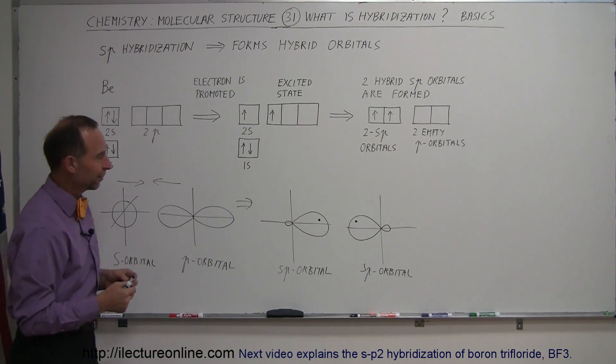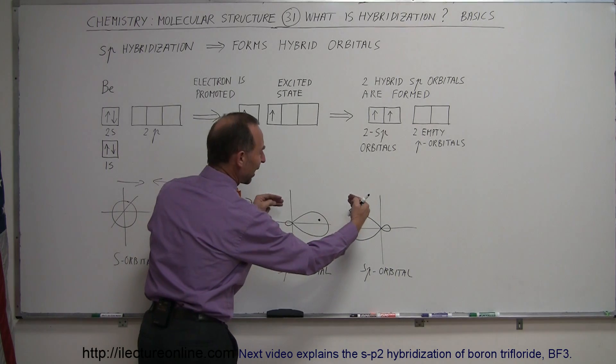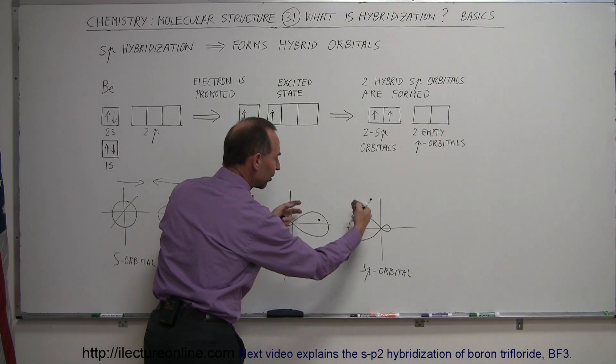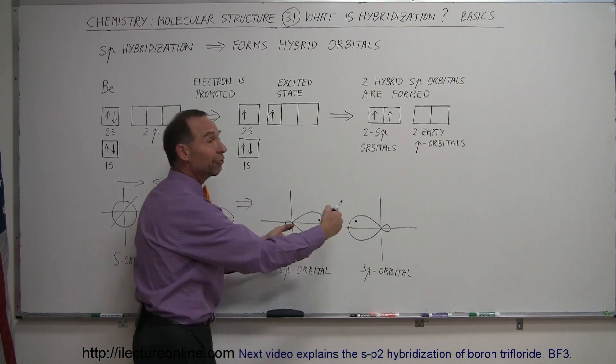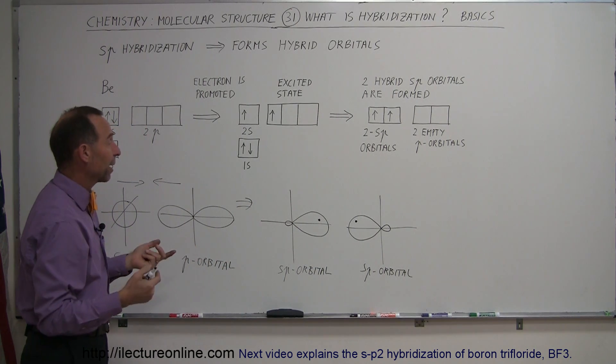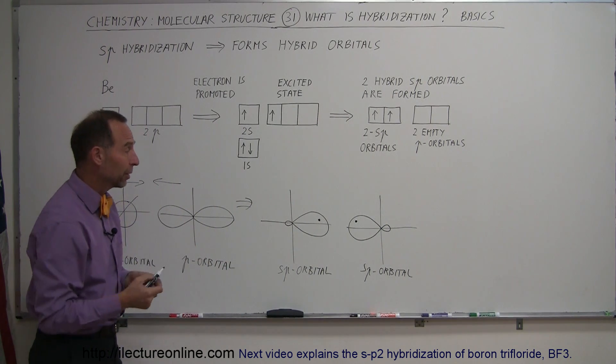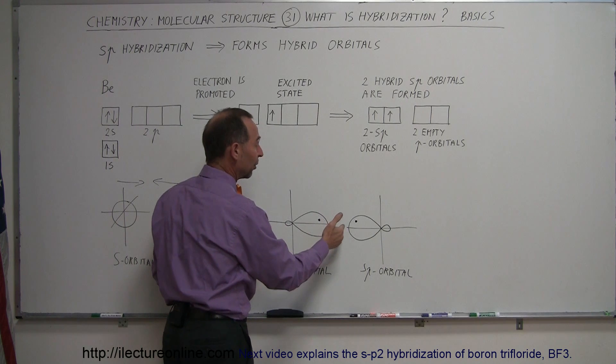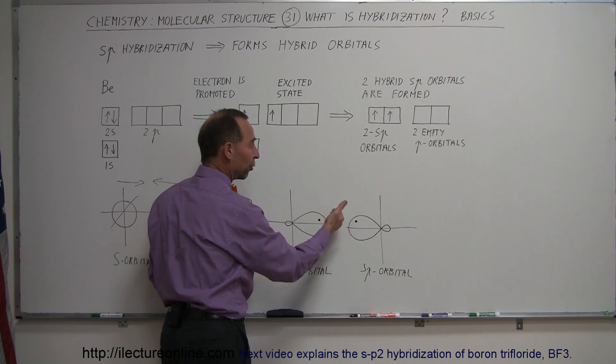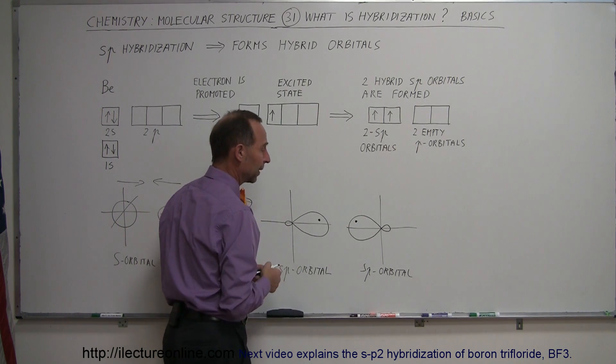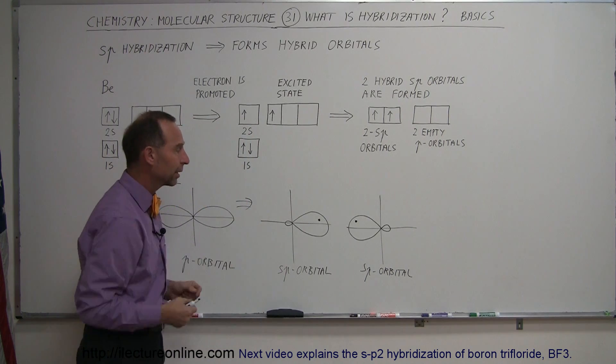So we have two electrons, one in each sp orbital, and those can then form bonds with another atom. For example, we can have beryllium chloride because each of the chlorine atoms needs one additional electron to form a complete octet in its valence shell. And so the bonding can take place like that.